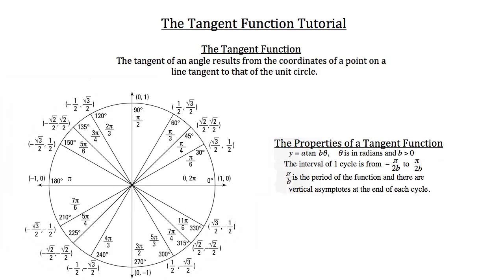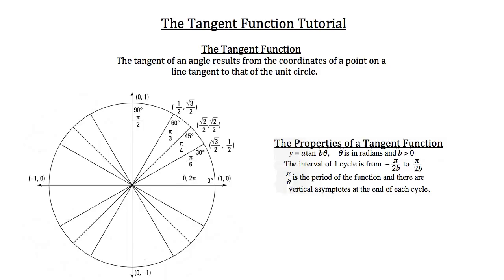For this demonstration I'm only going to use the coordinates in the first quadrant of the coordinate plane, so I'll get rid of everything else. Next I'm going to draw in two lines that are tangent to that of the unit circle, because the tangent of an angle results from the coordinates of a point on a line tangent to the unit circle.